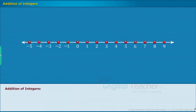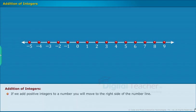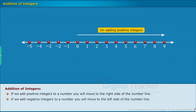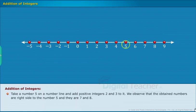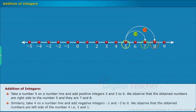Let us review the addition of integers on a number line. If we add positive integers to a number, we move to the right side of the number line. Take a number 5 on a number line and add positive integers 2 and 3 to it. We observe that the obtained numbers are on the right side of the number 5 — they are 7 and 8. Similarly, take 4 on a number line and add negative integers minus 1 and minus 3 to it. We observe that the obtained numbers are on the left side of the number 4, that is 3 and 1.